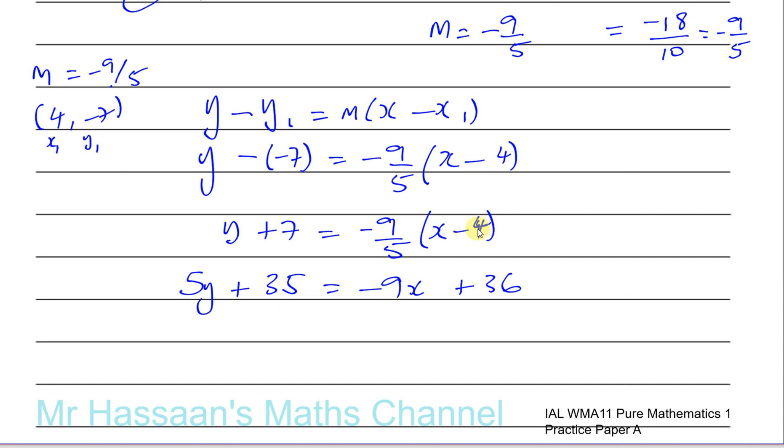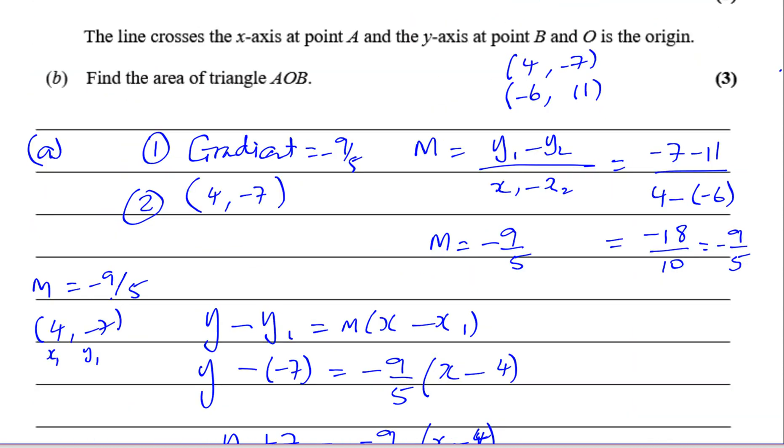-9 times -4 is +36. I like to keep the X's positive, so bring all terms on this side: 9X + 5Y + (35 - 36) which is -1 = 0. That's part A.